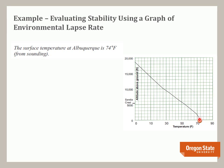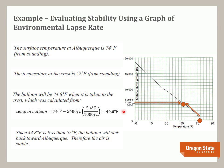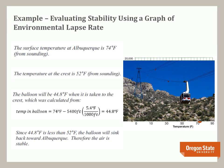First, we determine the temperature of Albuquerque from the graph: it's 74 degrees. Next, we determine the temperature at the crest: it's 52 degrees. Then we determine the temperature of the air in the balloon as we move it to 5,400 feet, using the dry adiabatic lapse rate. The answer is 44.8 degrees Fahrenheit. Since 44.8 degrees is less than the temperature at the crest, the air will sink. Therefore, this is a stable atmosphere and high pressure will form, resulting in beautiful weather — which we frequently find in Albuquerque, as shown by this nice blue sky and view of the Sandia tram.